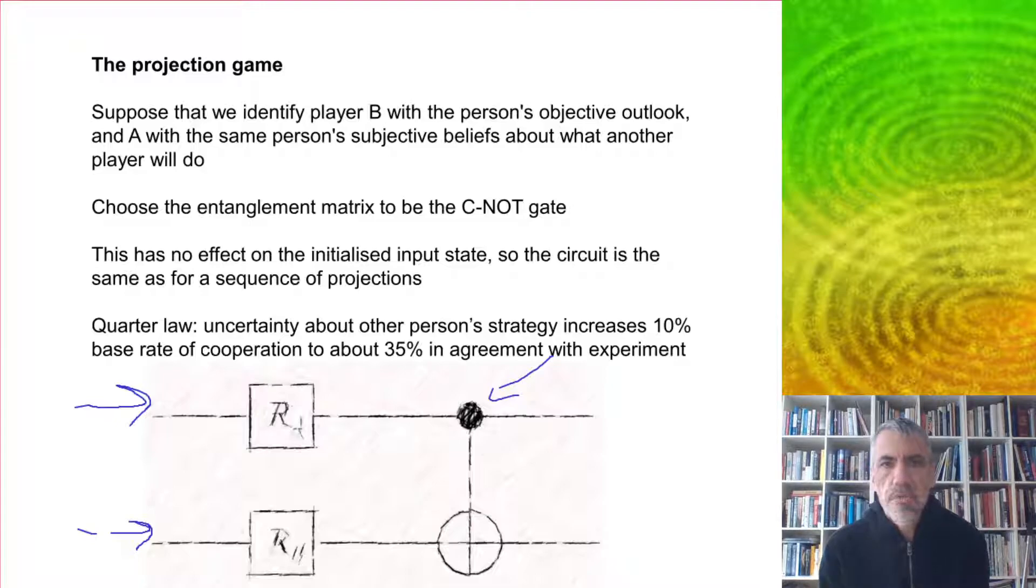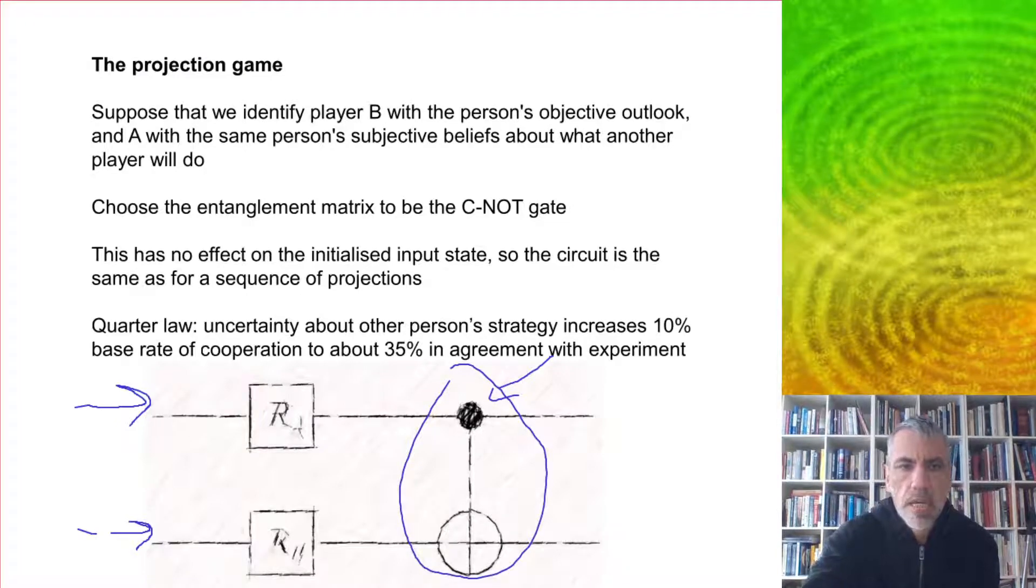If we choose the entanglement matrix now to be the C-NOT gate, the C-NOT gate has no effect on the initial state if we start with everything in the cooperate-cooperate state. The C-NOT gate doesn't do anything to that, so we can just omit that from the beginning of the circuit here.